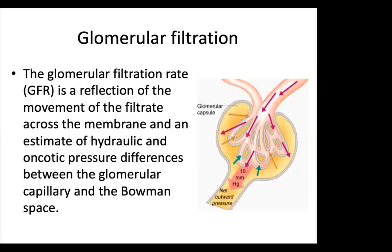The glomerular filtration rate reflects the movement of filtrate across the membrane, estimated by hydraulic and oncotic pressure differences between the glomerular capillary and Bowman space. After blood passes from the main renal artery, it travels through smaller branching interlobar, arcuate, and interlobular arteries until it reaches the afferent arteriole, where it can enter the glomerular capillary and passive filtration occurs across the membrane.